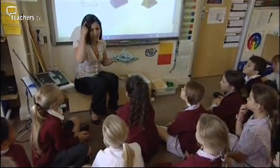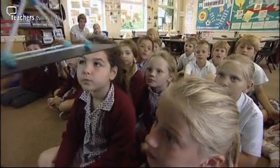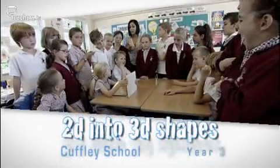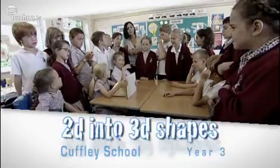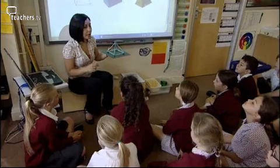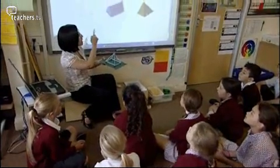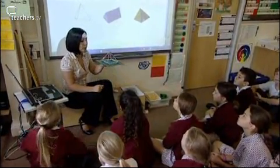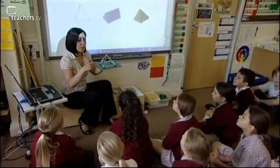You are going to be visualising in your head and creating 3D shapes like this one from some drawings. The idea of visualising 3D shapes from drawings is an opportunity for the children to practically make the shapes after they visualise them. It's just a very different way of doing it. Now on the board I've got three different 3D shapes and I would like you to see if you can work out what shape I have made.